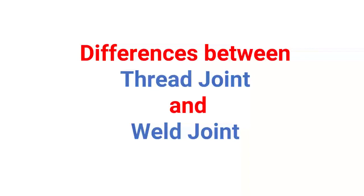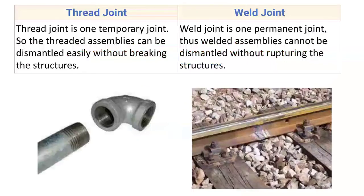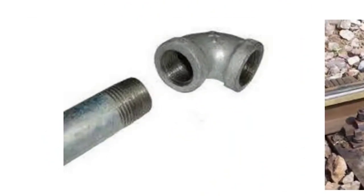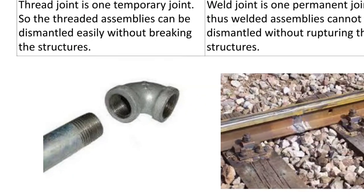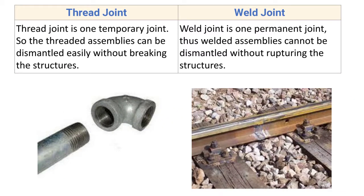In this video we will discuss the differences between thread joint and weld joint. The very first difference: thread joint is a temporary joint. The threaded assemblies can be dismantled easily without breaking the structure. Here you can see an example of a threaded joint — it is temporary, and you can dismantle it whenever you want without breaking it.